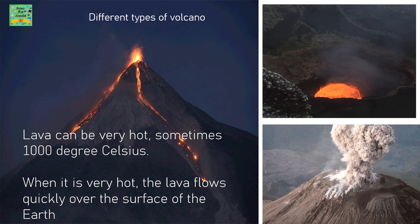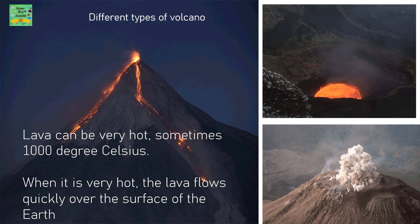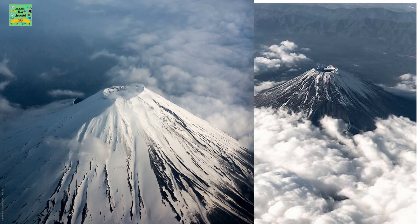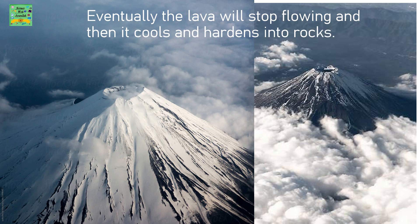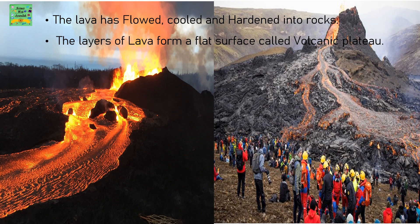Different types of volcano. Lava can be very hot, sometimes 1000 degrees Celsius. When it is very hot, the lava flows quickly over the surface of the earth. Eventually the lava will stop flowing, then it cools and hardens into rocks. The islands of Hawaii in the Pacific Ocean are made of layers of lava. The lava has flowed, cooled and hardened into rocks. The layers of lava form a flat surface called a volcanic plateau.